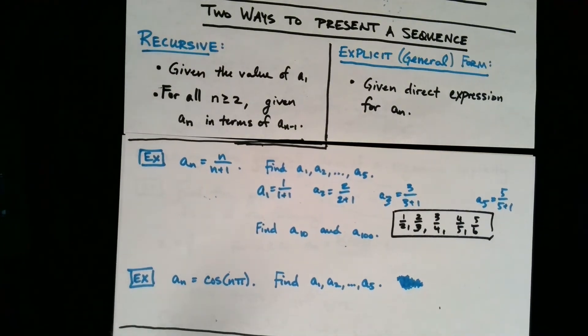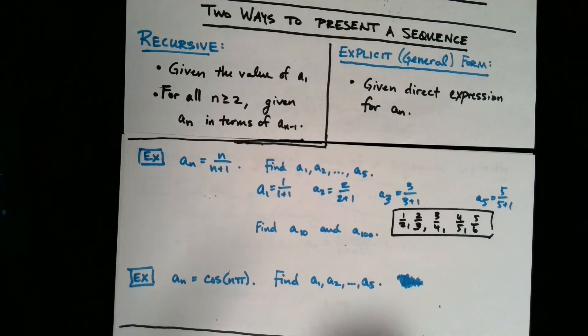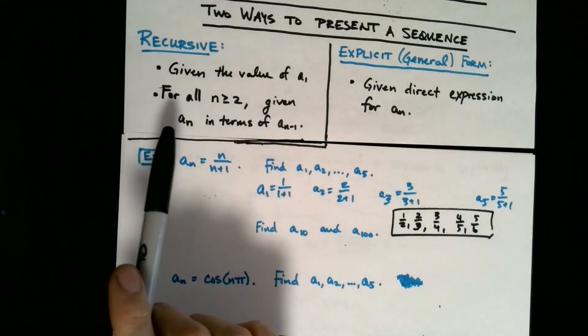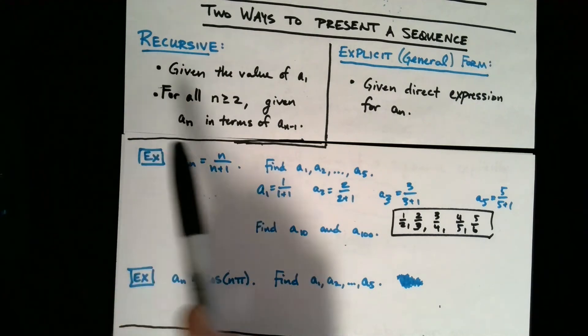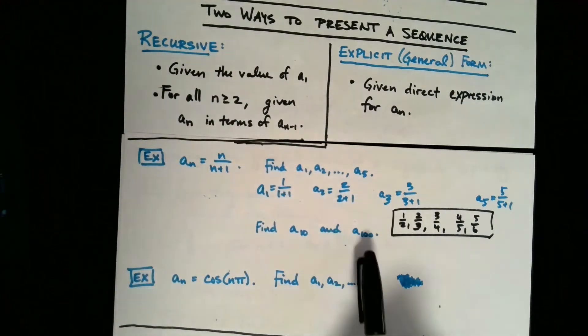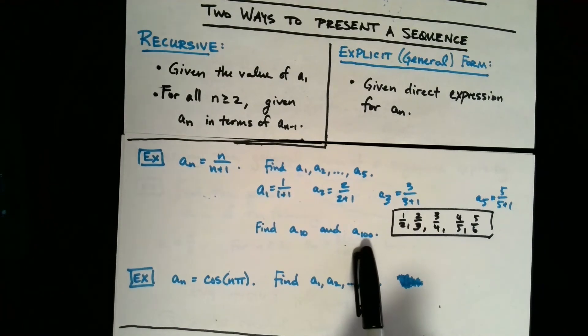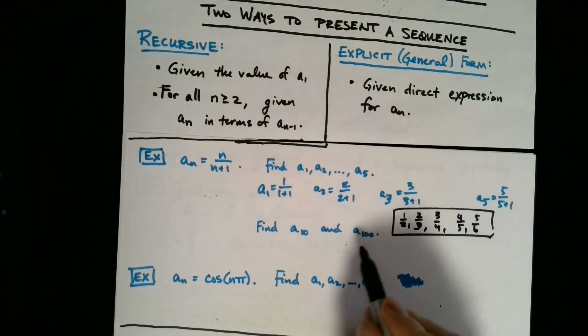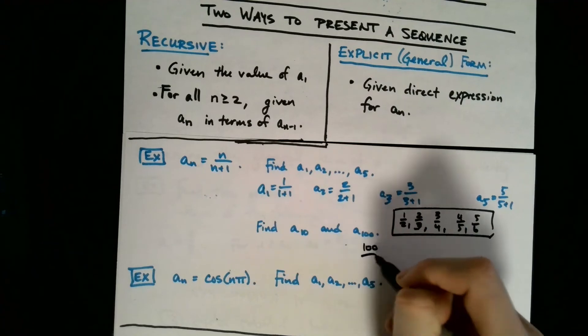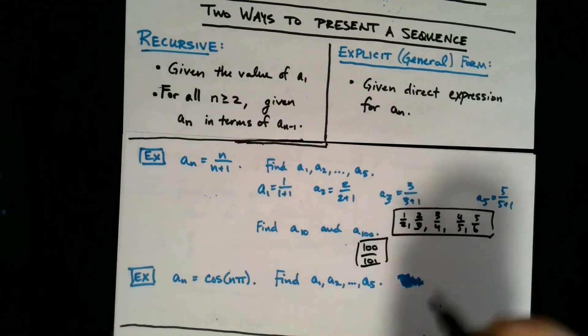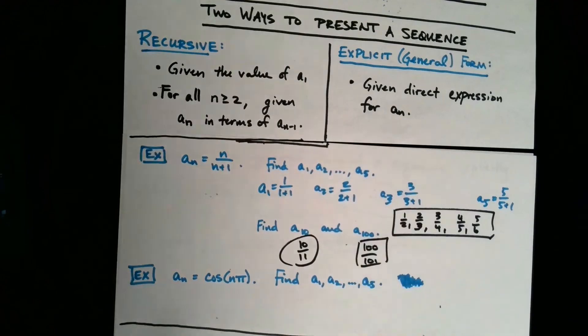Here's the terms a₁ through a₅ provided this relation. Now one thing that's really nice with the explicit or general form is you can very quickly find terms that are deep into your sequence. Whereas with the recursive definition, if you needed to find a₁₀₀, you would have to do a lot of computations to get out that far. Whereas here, you can find a₁₀₀ simply by plugging in. So if we need to find a₁₀₀, we plug in 100 over 101. We were also asked to find a₁₀, 10 over 11, no sweat.